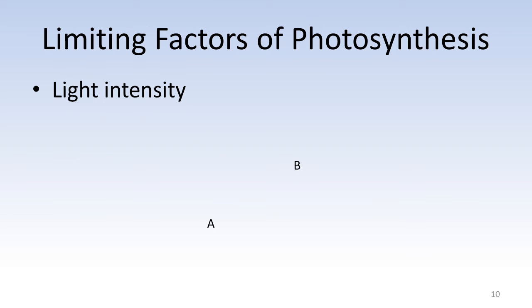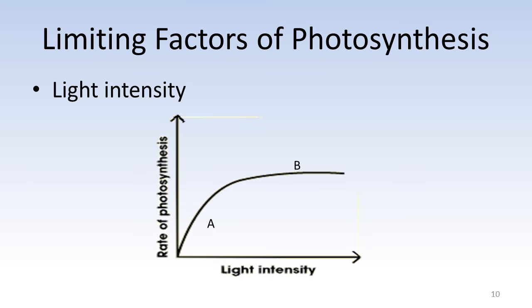Next we will look at the limiting factors of photosynthesis. These are factors that can increase or decrease the rate at which the process occurs. The first factor that we have is light intensity. If you look at the graph, you would notice that as light intensity on the x-axis increases, the rate of photosynthesis will also increase around point A.